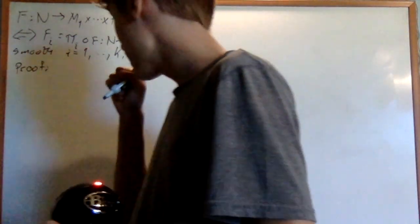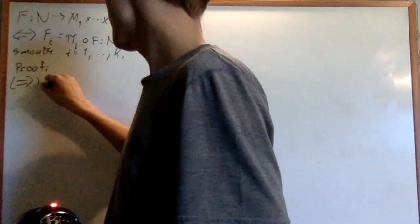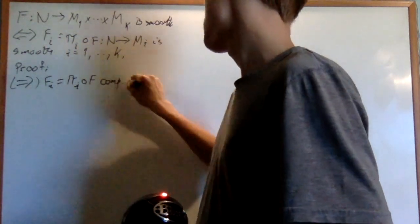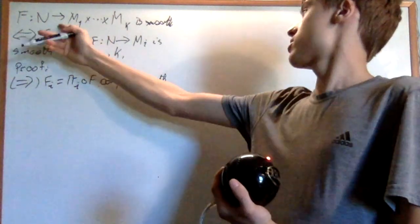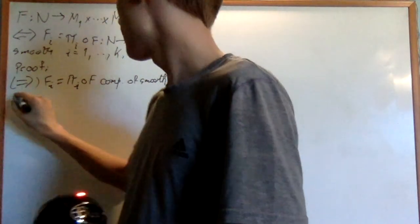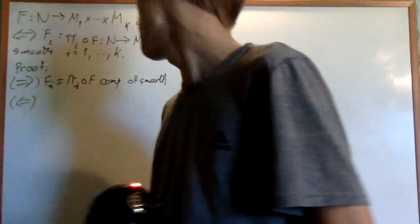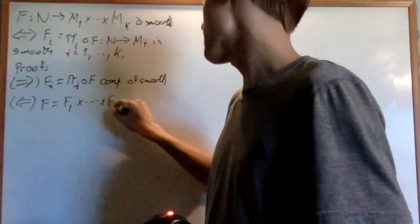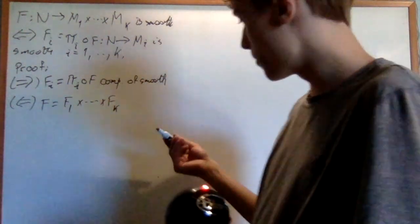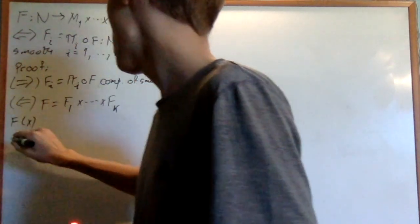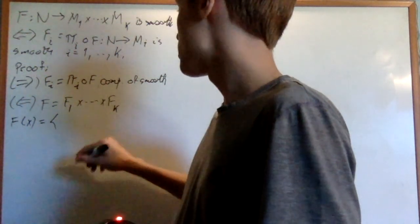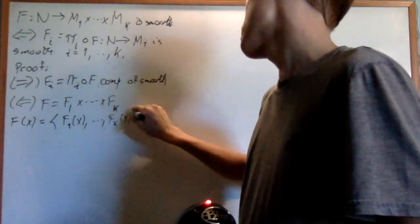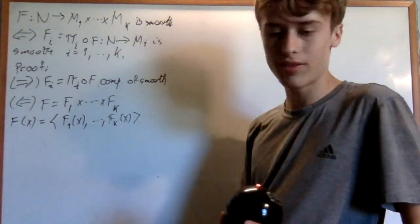Proof. Forward direction: F_i = π_i composed F is a composition of smooth maps, since π_i is smooth and F is smooth by hypothesis. Backwards — the converse: F equals the product (F_1, …, F_K), meaning F(x) = (F_1(x), …, F_K(x)). So F is just made up of its components.